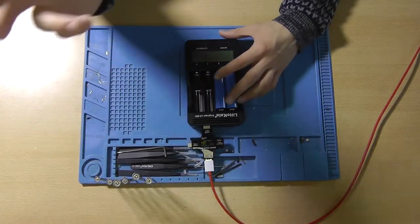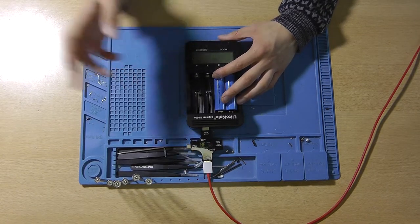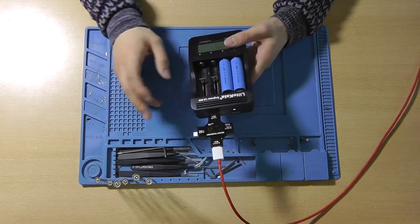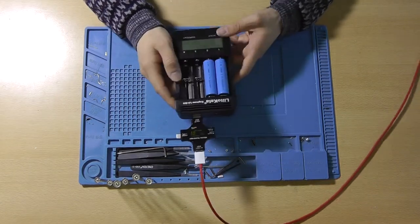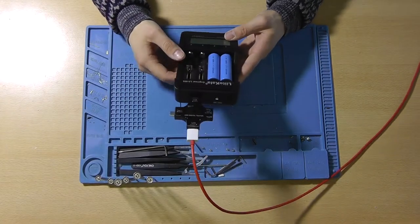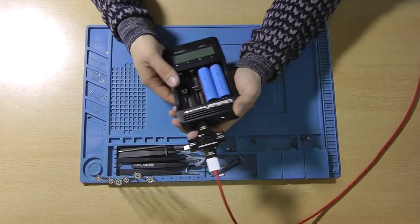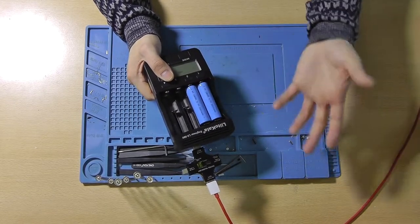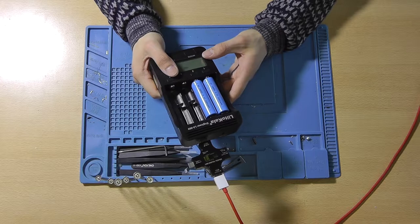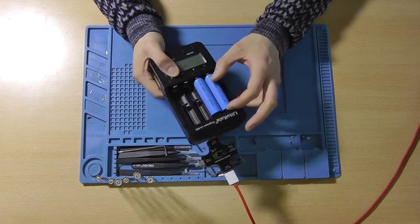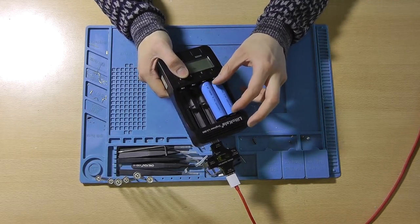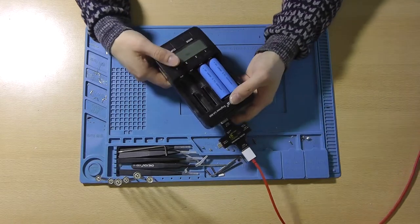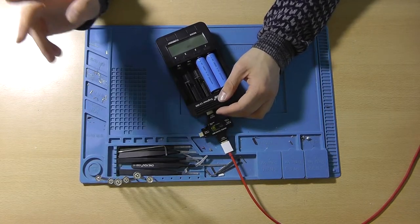It charges not only lithium but also AA, AAA, etc. It can also be used as a rather big power bank with a USB output at the back. You can connect your phone to it and when you put batteries inside it will charge your phone, which is quite convenient because you can charge your 18650s using solar power and then discharge them using this thing.